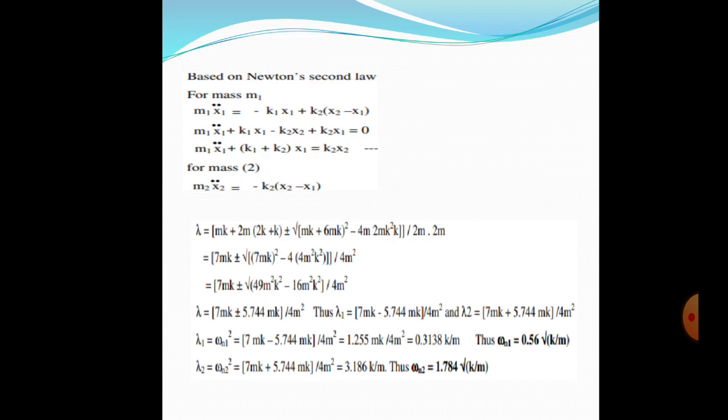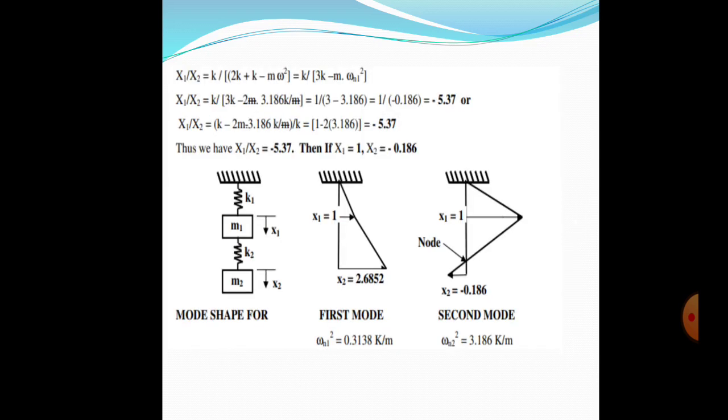After following this process, we got equations and by putting in those values, we get ωn1 = 0.56√(K/M) and ωn2 = 1.784√(K/M). This is the problem solution.